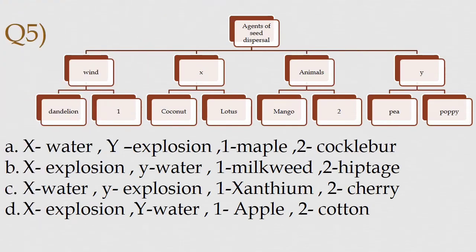Question 5: Read the given flowchart. Option A: X water, Y explosion, 1 maple, 2 cocklebur.